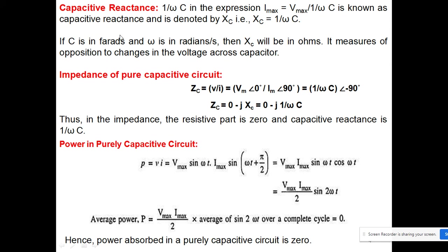From the last slide you can see this expression: I_max equals V_max divided by (1/ωC). From this, one upon ωC is nothing but V_max upon I_max, and it is nothing but the capacitive reactance, represented by X_C. Capacitance is represented in farads and ω in radians per second, so the reactance is represented by ohms. It measures the opposition to changes in voltage across the capacitor — just as the inductor opposes change in current.